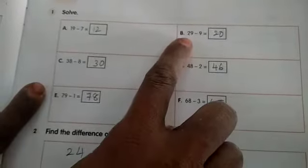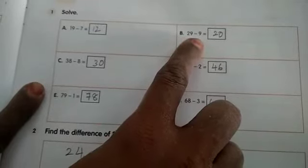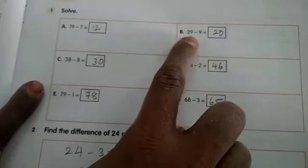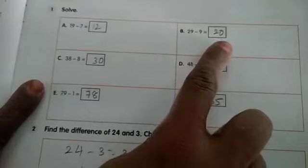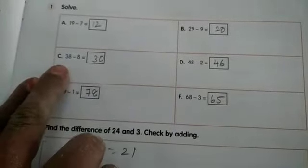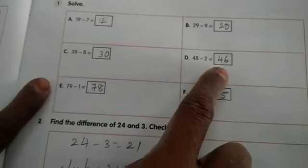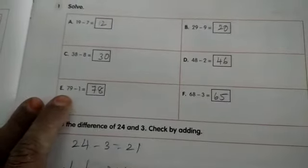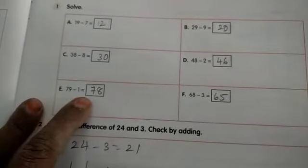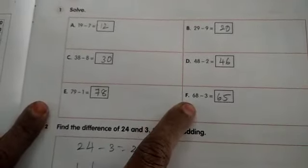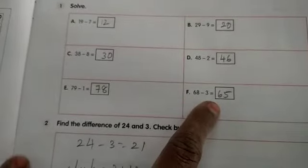B1 is 29 minus 9. What the answer will come? You have to do here children. C1 is 38 minus 8. D1 is 48 minus 2. E1 is 79 minus 1. F1 is 68 minus 3. Take the help of 100 chart.